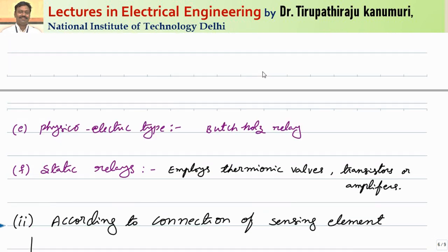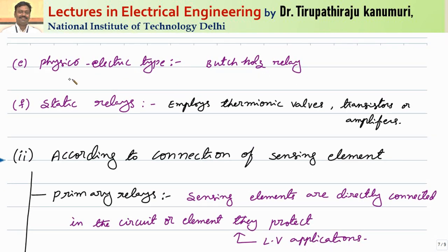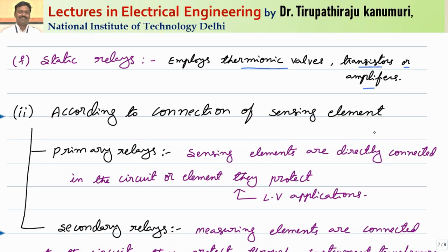The next type is the physico-electric type, with the Buchholz relay as an example. This relay is used with transformers to find incipient faults or slowly growing faults. Then there are static relays, which employ either thermionic valves, transistors, or amplifiers for their operation. As they involve only static elements, there are no moving parts — that is why they are called static relays. Their advantage is minimum power consumption.